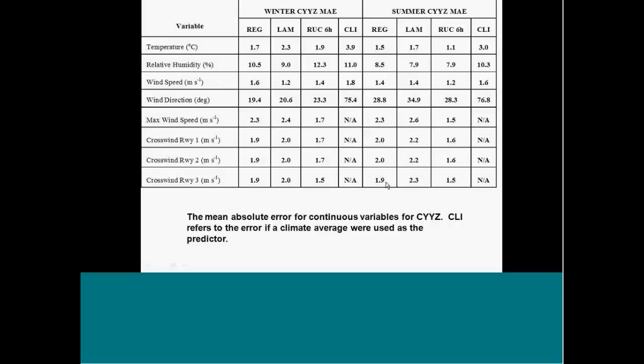Now I'm going to show you some verifications that we did for the winter of 2009-10 and the summer of 2010 for Toronto. And this just shows you the mean absolute error for temperature, relative humidity, wind speed, wind direction, the maximum wind speed or gusts and the crosswinds for the three runways. And of interest here is the fact that the relative humidity errors are quite high. This is, by the way, climatology. You just took the climatological value for that hour and used it. You would get that error. So what happens is the models are not even beating climatology, which is pretty bad for relative humidity.